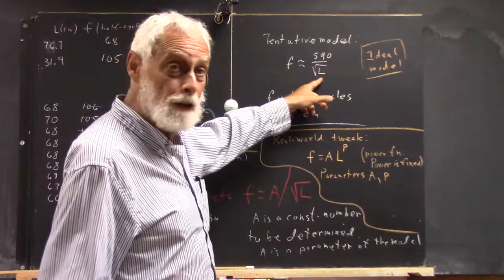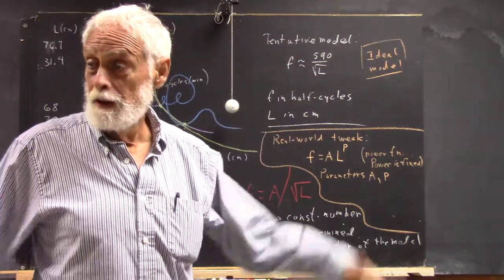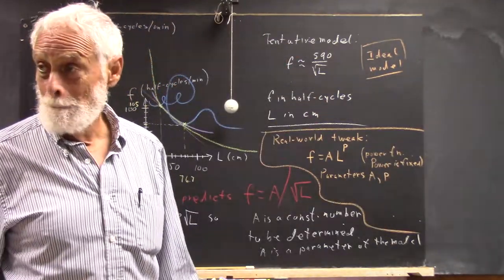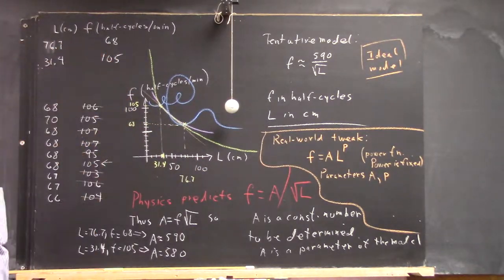Plug in 50 here, square root of 50 is just a little over 7. About 7 into 590, you get like 85. Give or take a couple. So we expect maybe about 85 half cycles per minute.